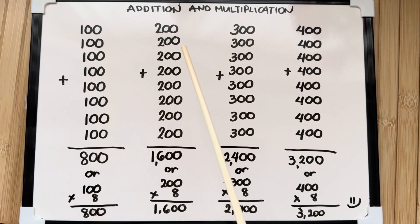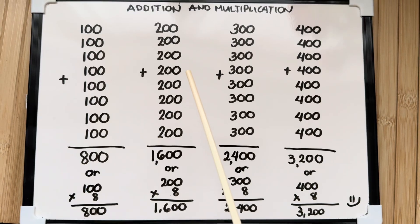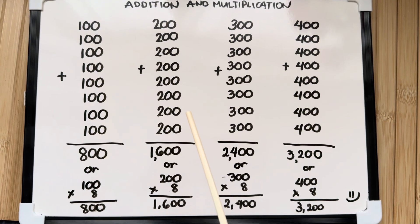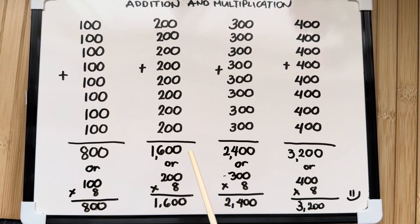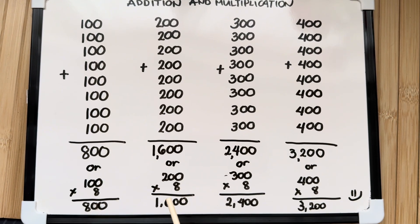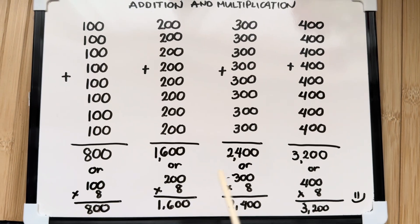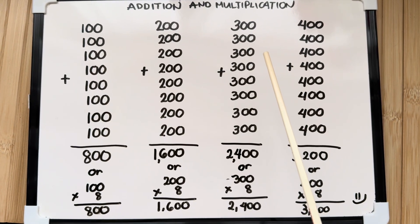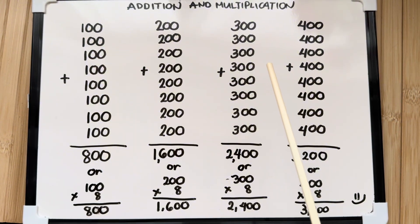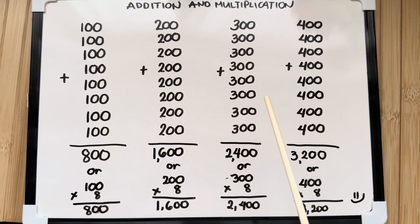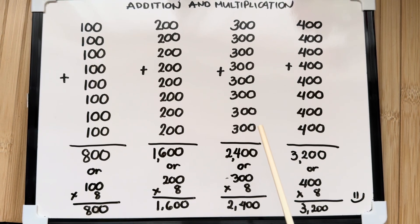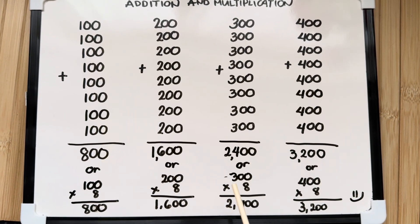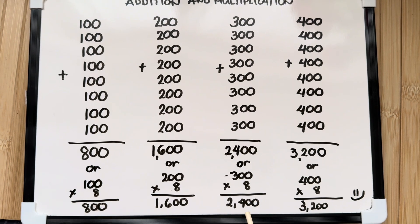200 plus 200 plus 200 plus 200 plus 200 plus 200 plus 200 plus 200 is equals to 1,600. 300 plus 300 plus 300 plus 300 plus 300 plus 300 plus 300 plus 300 is equals to 2,400, or 300 times 8 is equals to 2,400.